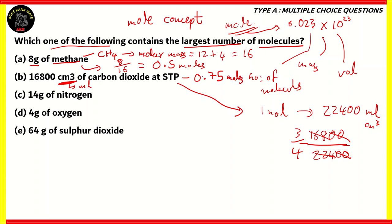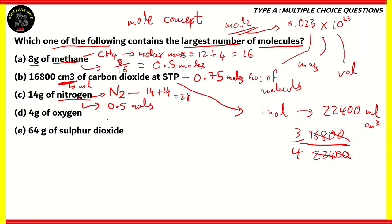Option C: 14 grams of nitrogen. Here it says nitrogen, not nitrogen atom, so we use the nitrogen molecule N₂. One nitrogen atom has a mass of 14u, so the molecular mass of N₂ is 14 + 14 = 28. The number of moles is 14 ÷ 28 = 0.5 moles.